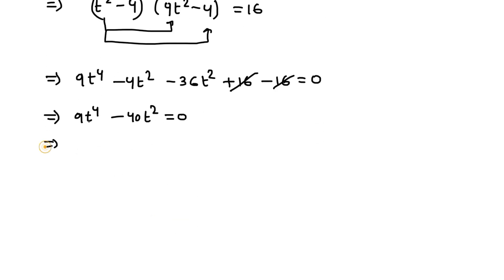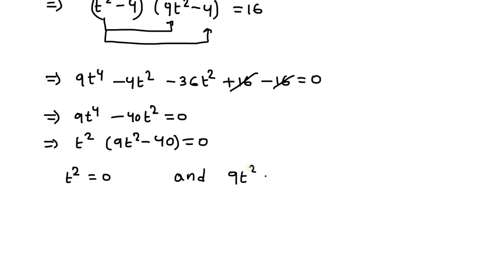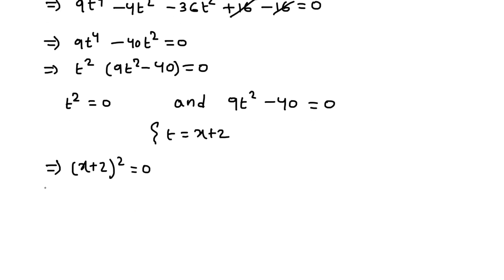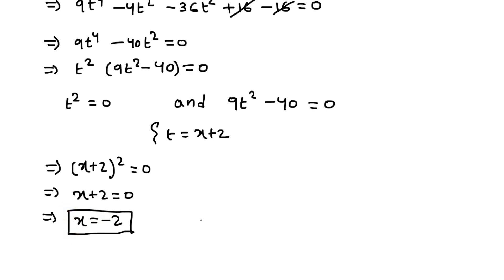Taking t² as common factor, we have t²(9t²-4) equals 0. From here we get t²=0, which gives t=0. Since t = x+2, substituting back: (x+2)²=0, so x+2=0, which means x = -2 is one solution of the given equation.